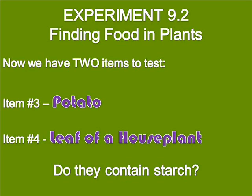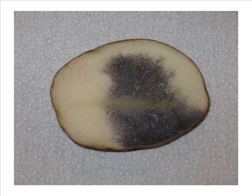Now we have our controls and we know what it will look like if an item has starch and what it will look like if an item doesn't have starch. So now we're going to test two items. The first will be item number three, a potato. Here's the picture of the potato, and as you can tell, the iodine turned it a very dark blue color, which tells us that just like the bread, potatoes contain starch. You need to pause the video right here and draw a picture of this slide on your lab report.